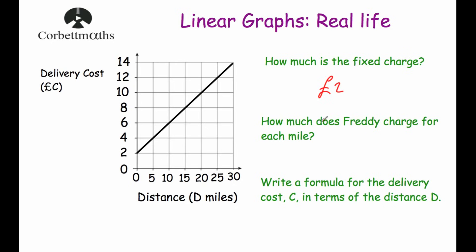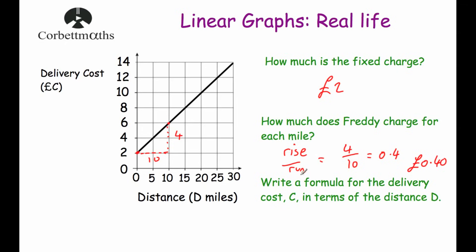How much does Freddie charge for each mile? That's the gradient of the line. Choosing two points — (0, 2) and (10, 6) — we use rise over run. The rise is from £2 to £6, so 4 pounds. The run is from 0 to 10, so 10. Four divided by ten is 0.4. Dealing in pounds, that is £0.40 or 40p. So for every mile, Freddie charges 40p.